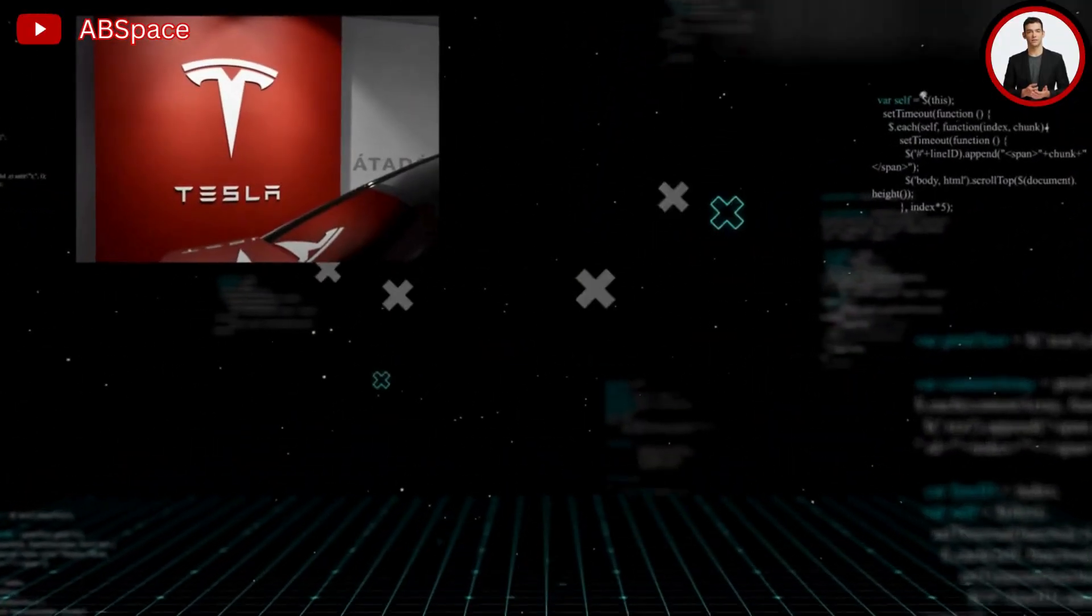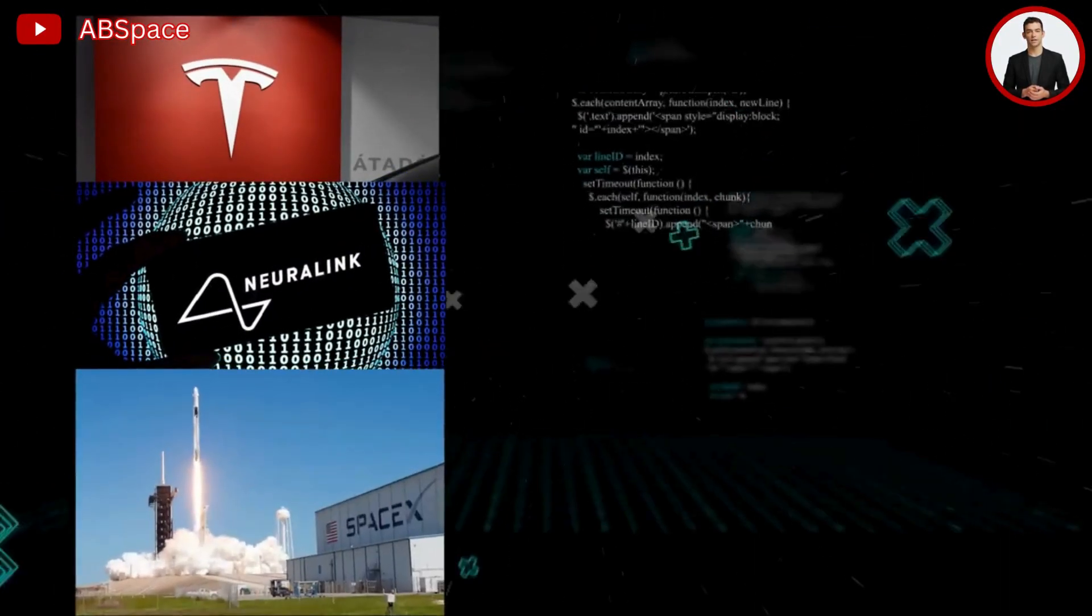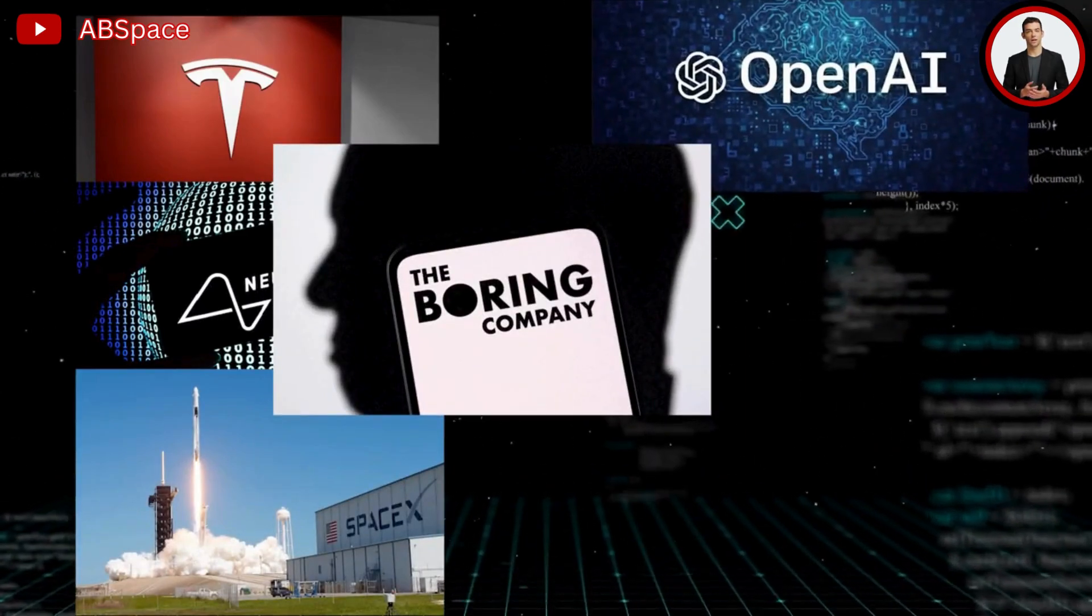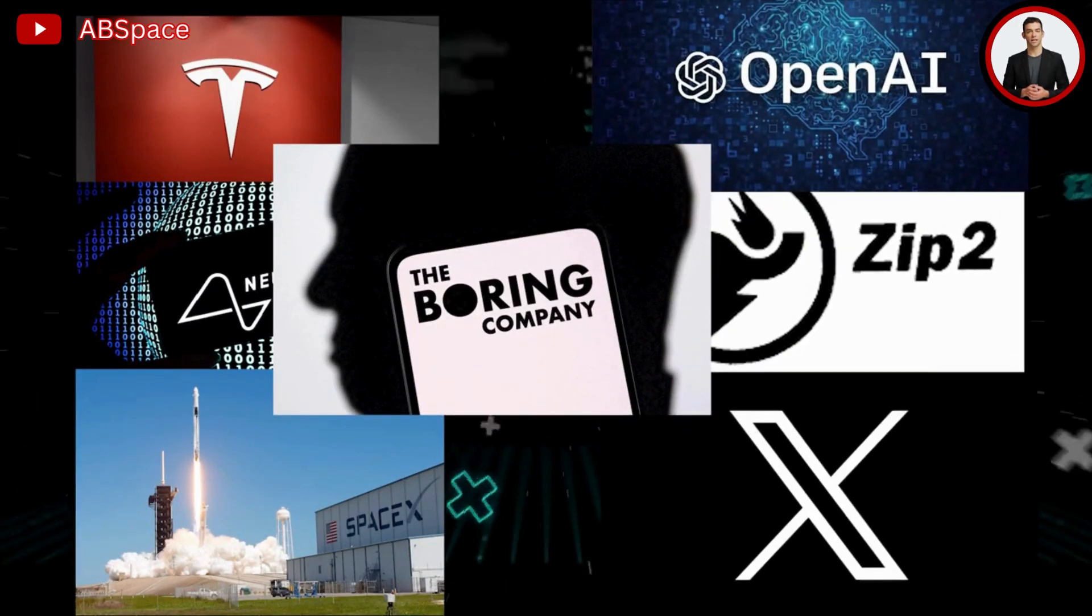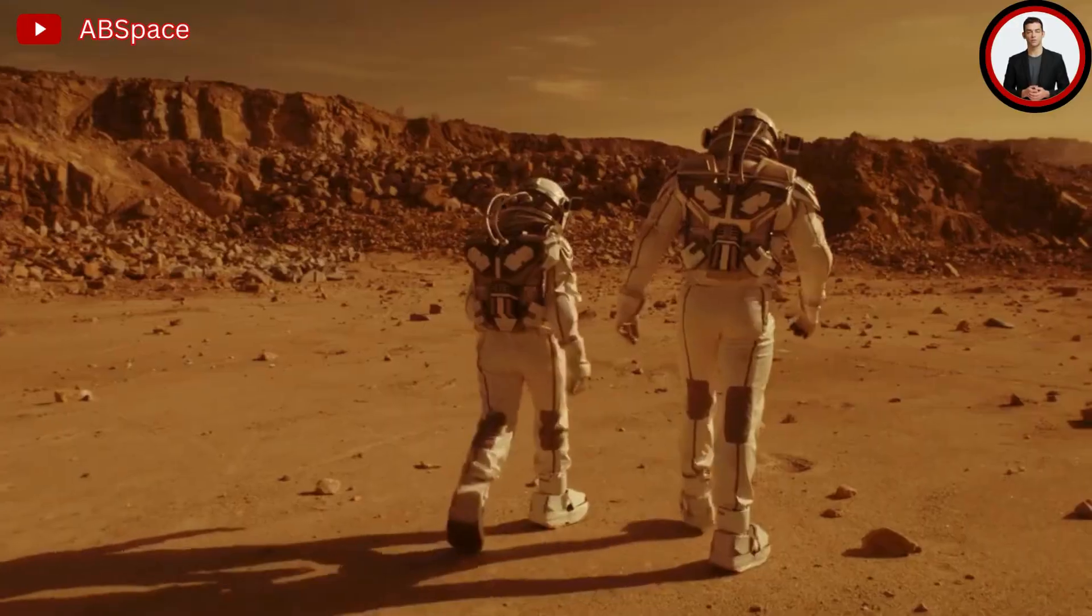Elon Musk is a business magnate, investor, and serial entrepreneur who has created or co-founded at least seven firms. The companies in consideration are Tesla, Neuralink, SpaceX, The Boring Company, OpenAI, Zip2, and X.com, in that order.